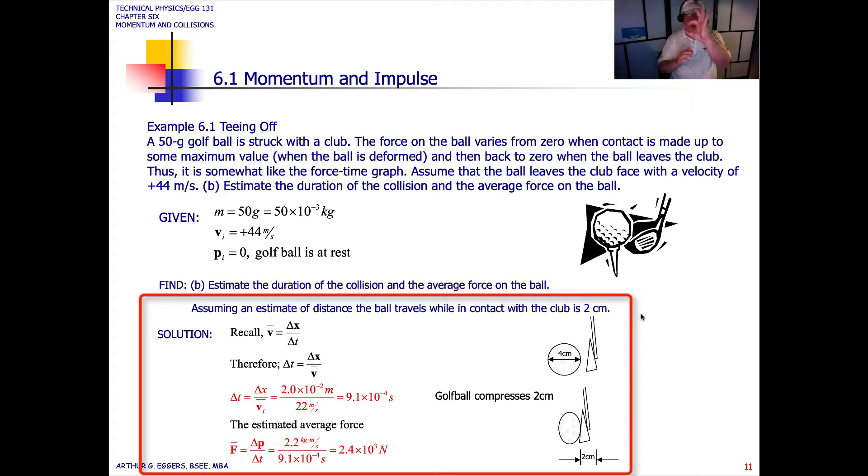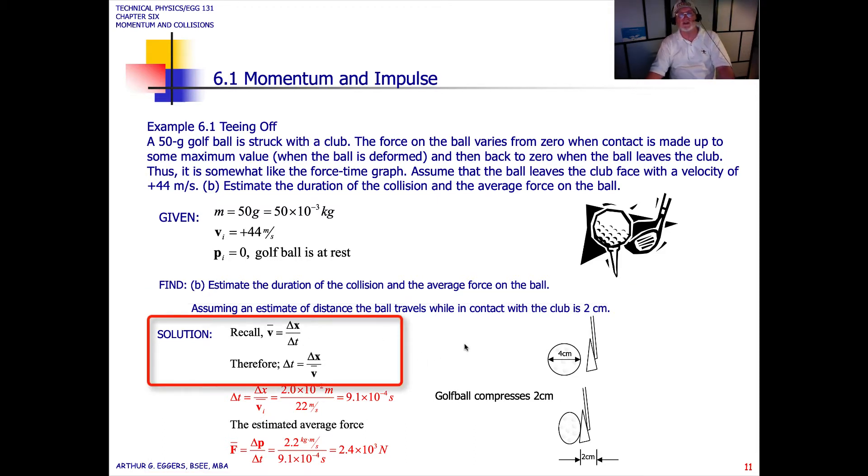A golf ball is only about that big around. I had some laying around here. About that big around. If you figure it compresses just a little bit and we estimate if the ball is about 4 centimeters across, we're going to estimate 2 centimeters. Recall that the average velocity then is delta x by delta t. We're going to use this as part of that understanding that compression. Therefore, let's move the terms around. The time, the duration, they're asking us for the estimate of the duration of the collision given that 2 centimeter estimate. That delta t then is equal to delta x divided by the average velocity.